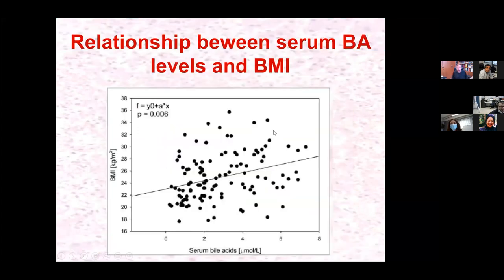To summarize these metabolic effects: bile acids activate FXR in the intestine and also TGR5 with production of GLP-1. Through FXR agonism they stimulate production of FGF19. Bile acids that are reabsorbed can activate TGR5 in adipose tissue and muscles, and also FXR in the liver. Activation of FXR in liver tissue activates multiple pathways with a strong metabolic impact. Unpublished data from our group, in which we measured serum bile acids by GC-MS in healthy subjects, showed that the higher the BMI, the higher the bile acid concentrations.